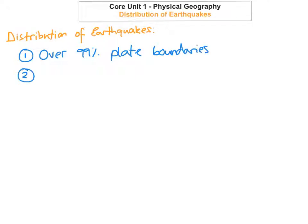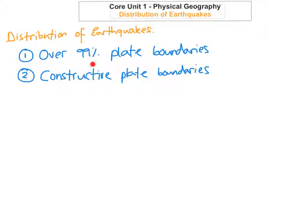Earthquakes are found along constructive plate boundaries. An example of this would be along the Mid-Atlantic Ridge. Because the plates are pulling apart, they tend to be very moderate in intensity and they don't tend to cause too much destruction.